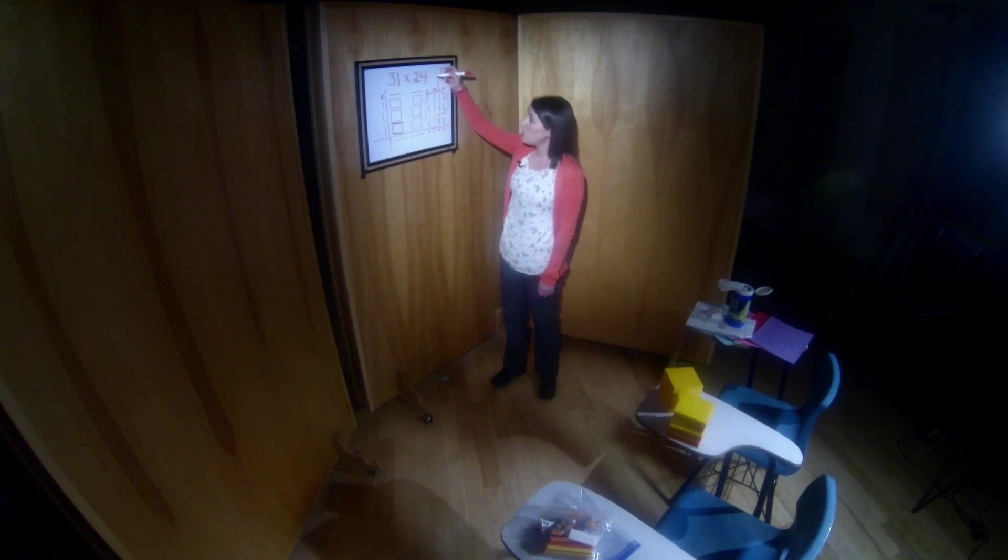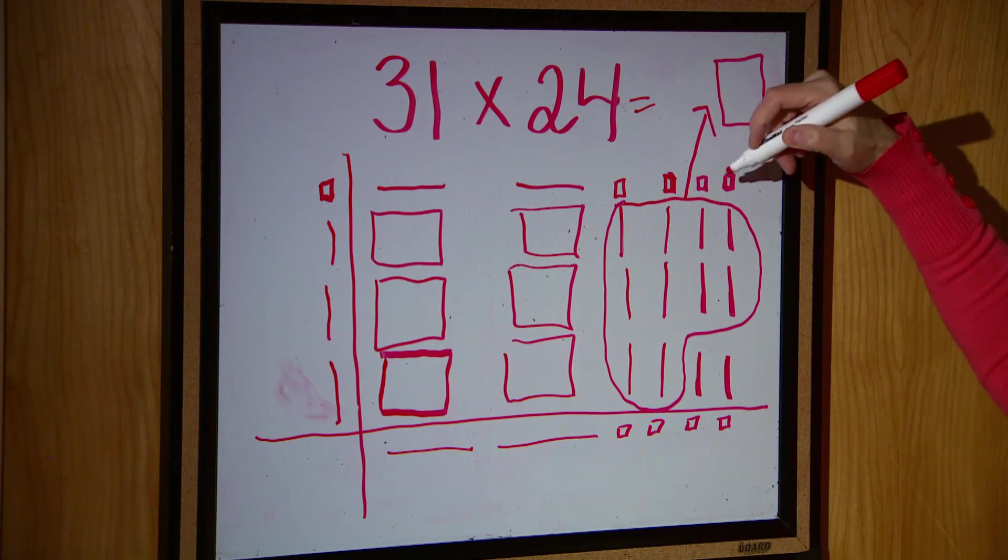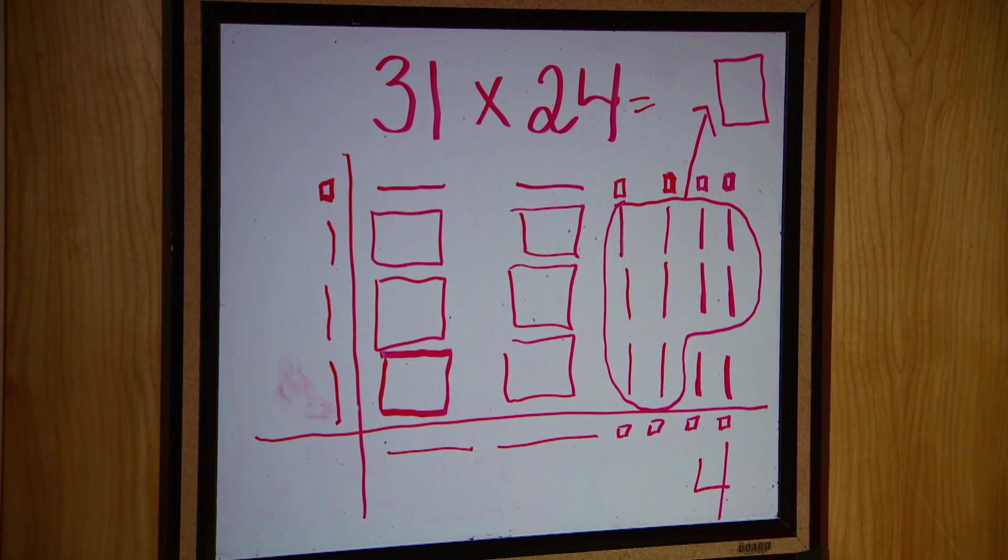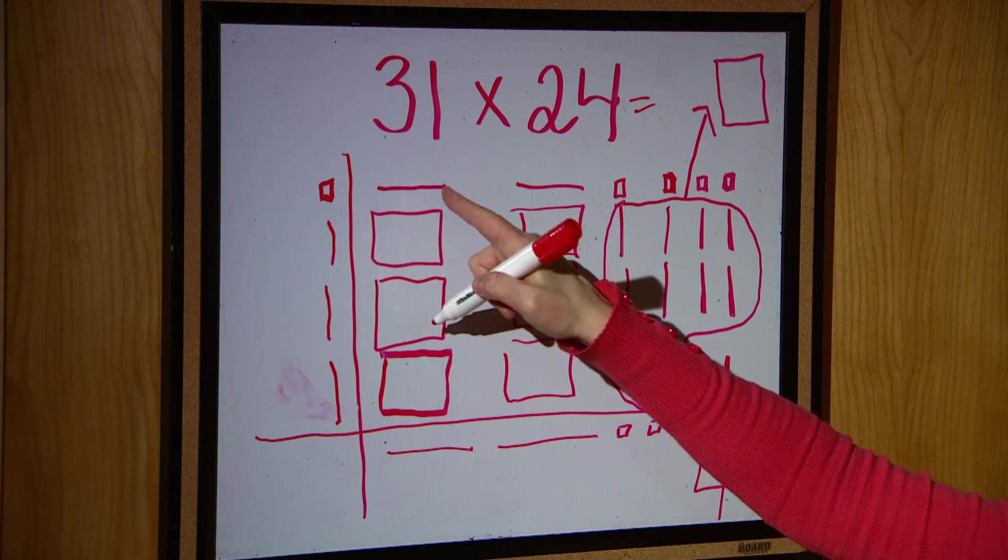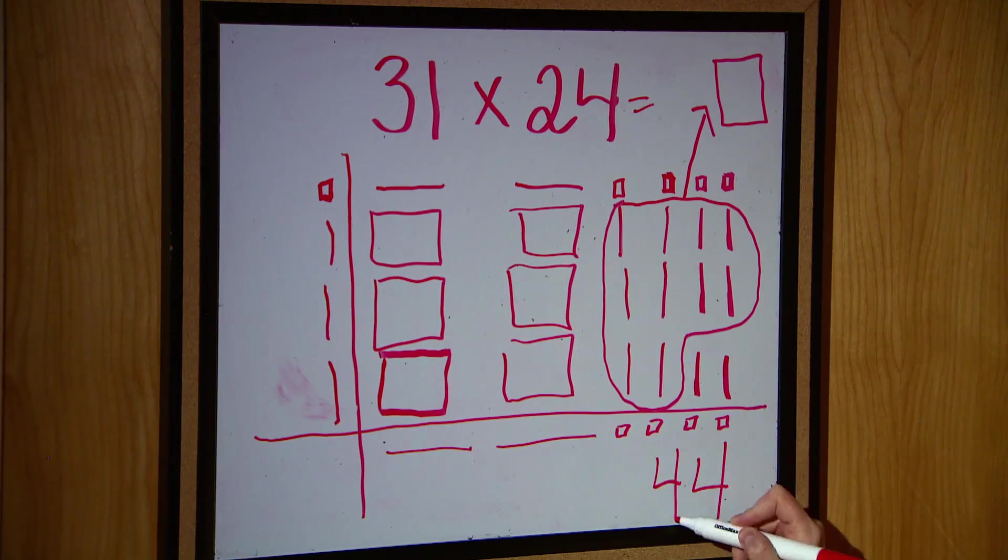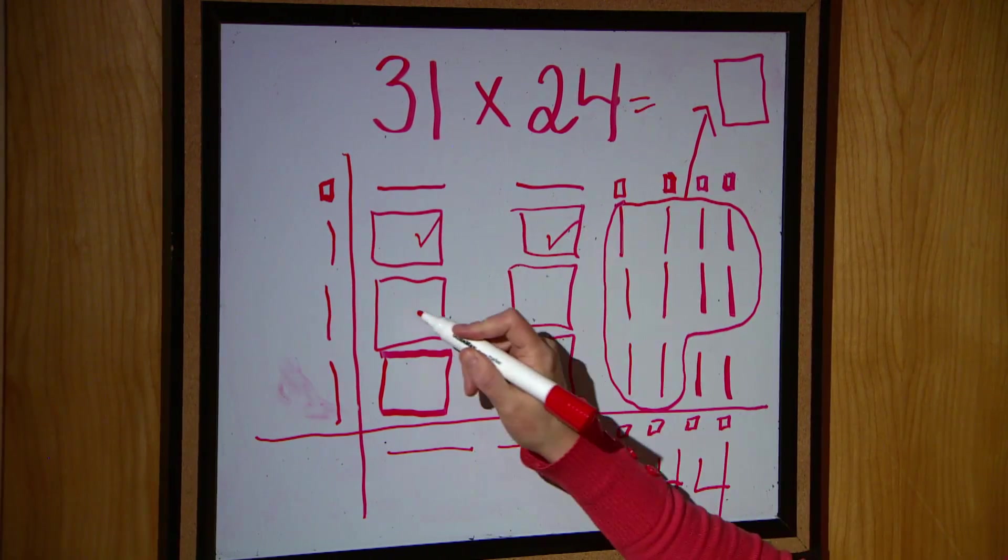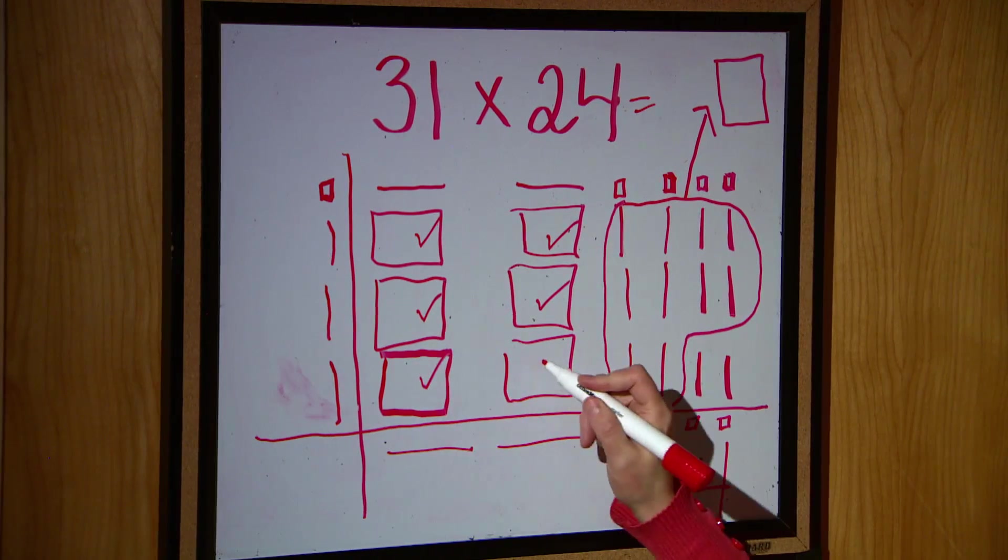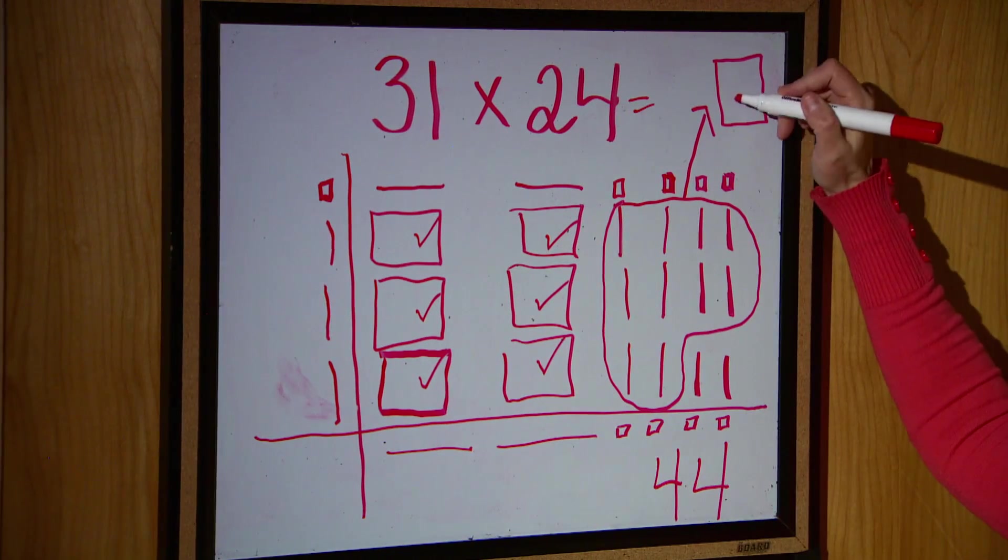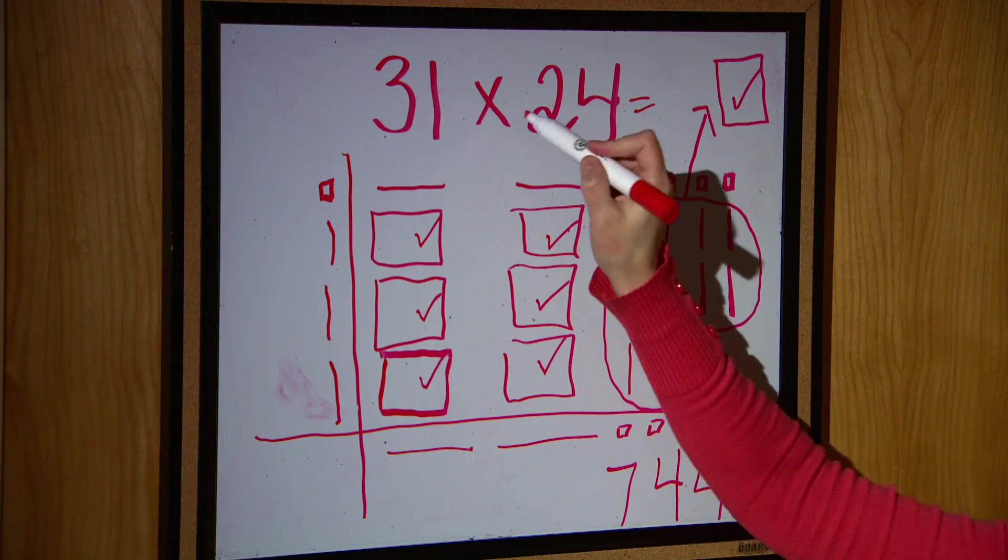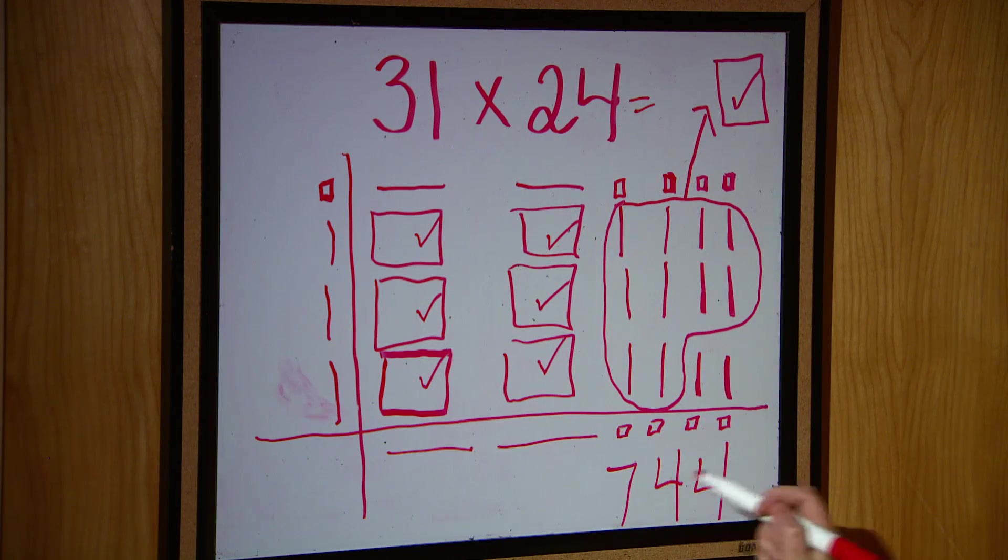So what will my answer be to this equation? I have four units. How many tens do I now have, or rods as we would call them? I have four. How many flats or hundreds do I have? I have seven, and this is the commonly missed one. So I've just demonstrated to you that 31 times 24 is 744.